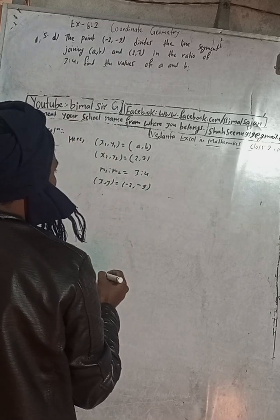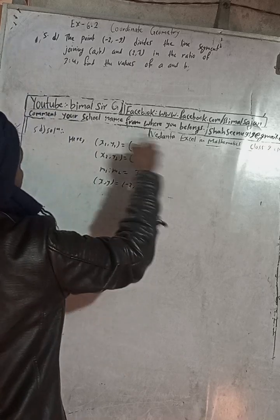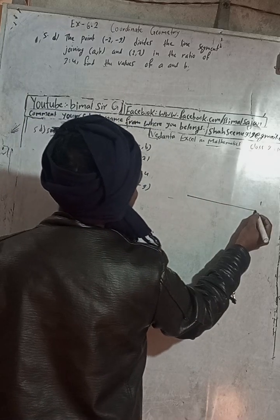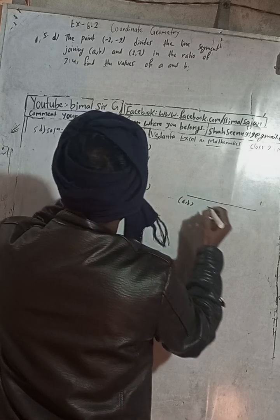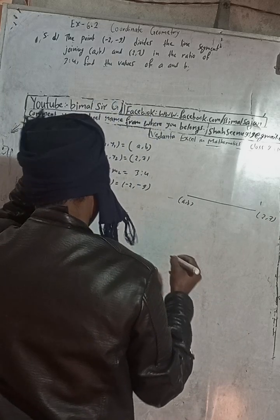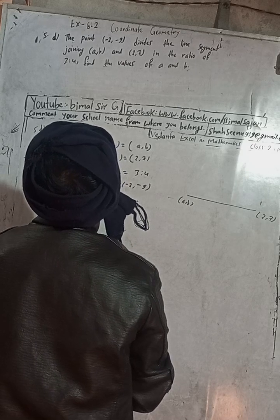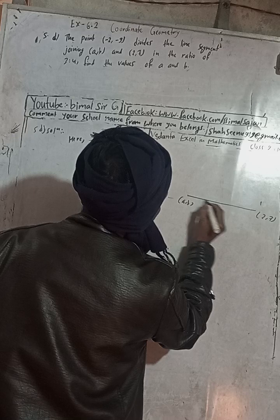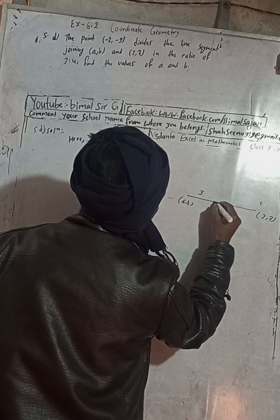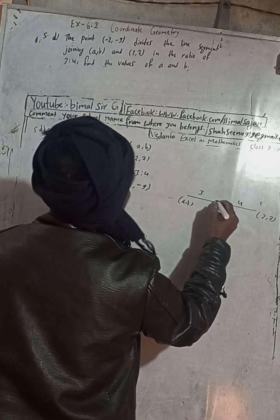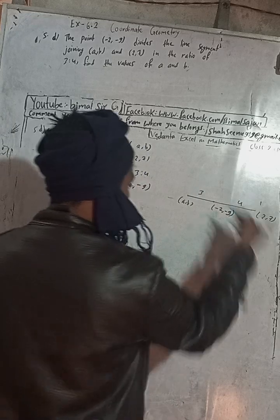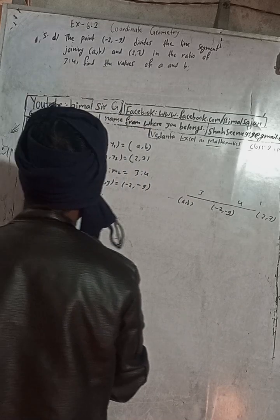Now if you want to understand this in the figure, see this is the line joining, so x1, y1 means this here is our (a, b) and this is x2, y2 means here our (2, 7). Now this point divides the length segment joining this in the ratio 3:4, so this is 3 and this is 4 here. And this point is here (-2, -9).